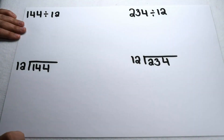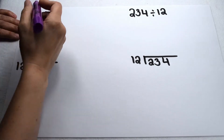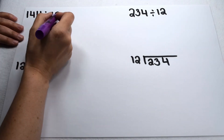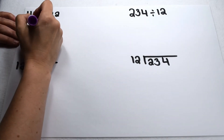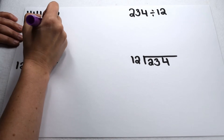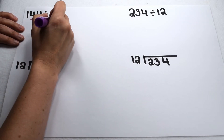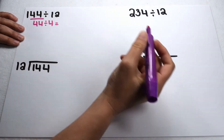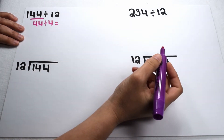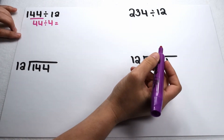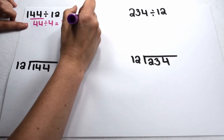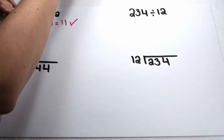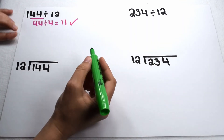We can use this to test whether larger numbers will also be divisible by 12. Here we have 144 divided by 12. Let's start by testing to see if 144 is divisible by 4. To do that, we check to see if the last two digits are divisible by 4. So we have 44 divided by 4, which gives us 11. So that checks out.